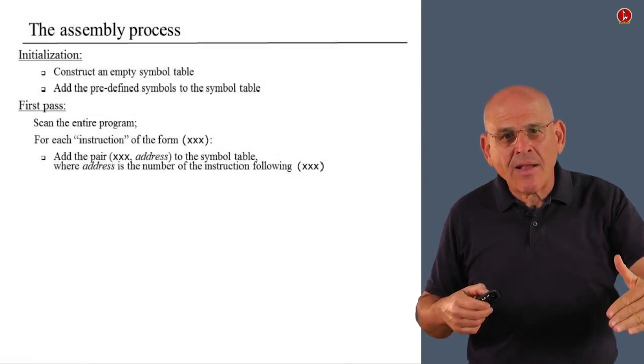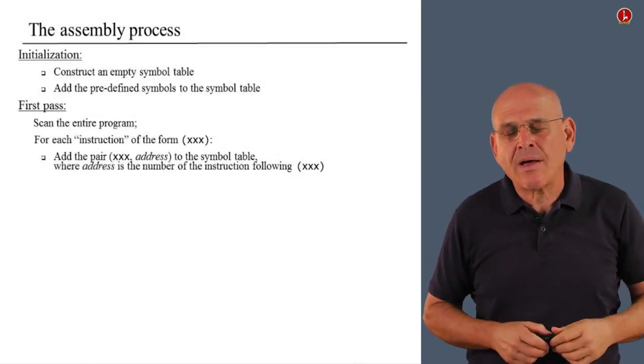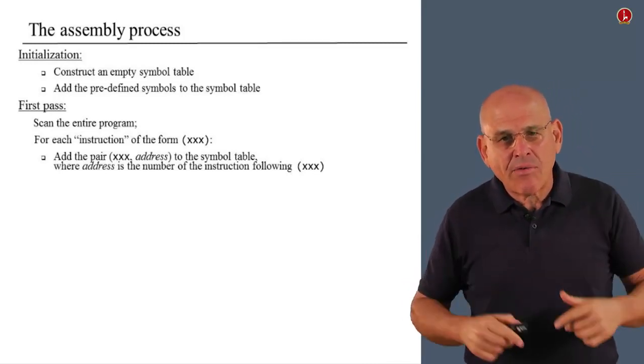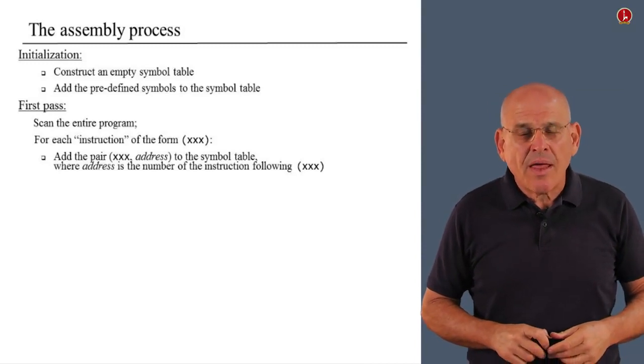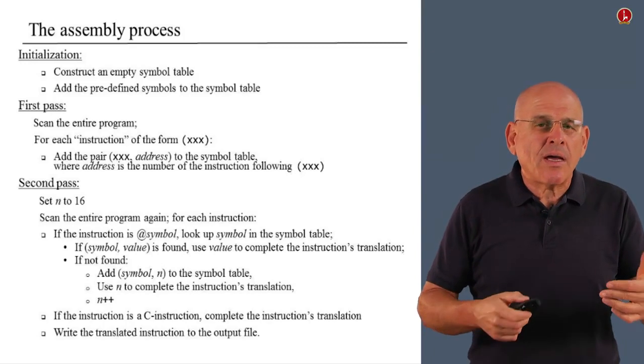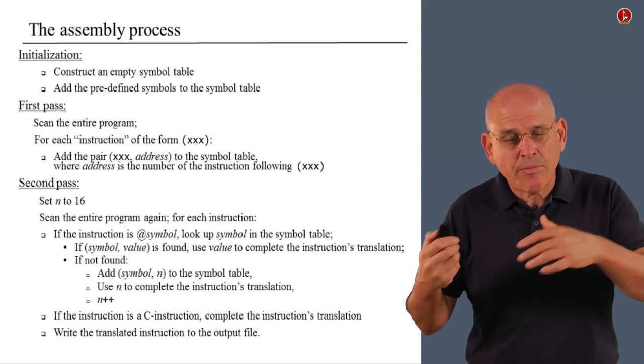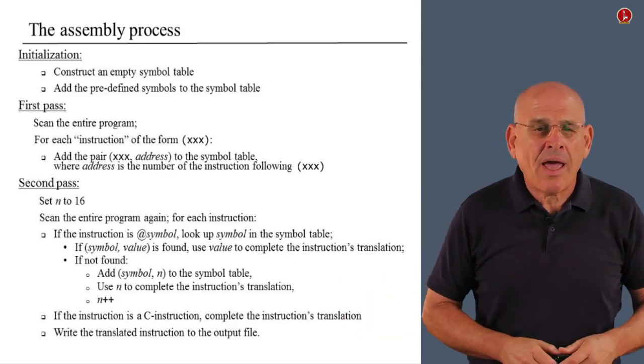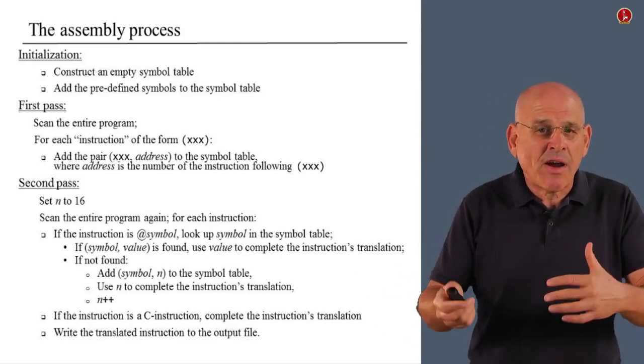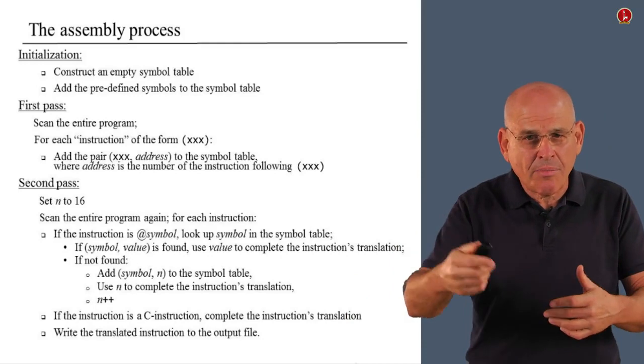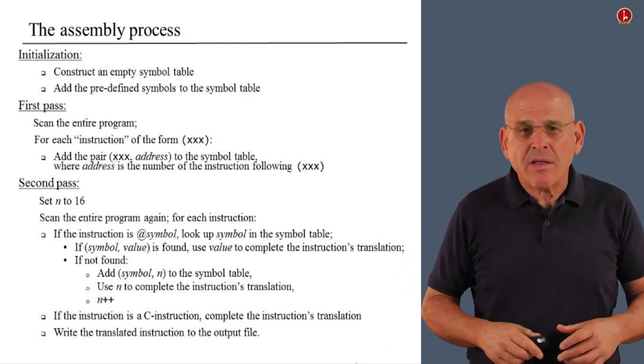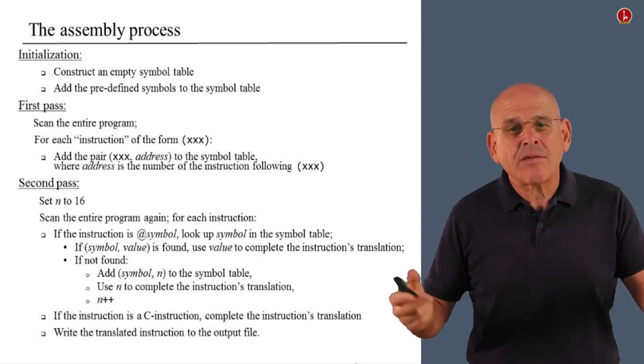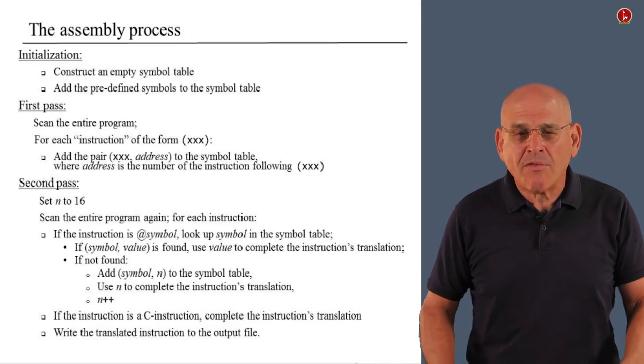We do a first pass. We go through the entire input file, and we search for instructions that begin with the left parentheses. And we add the pair XXX address to the symbol table as we go along. Then we do a second pass. In the second pass, we take care of the variable declarations, as I explained earlier. And at the same time, if we have an instruction which is a C instruction, we simply translate it into binary code. And if we have another at instruction which deals with the variable that has been declared previously, we look up the table, we replace the values, and so on. We take the binary code that we generated, we write it into the output file, and that's it. We have completed translating the program from symbolic to binary.